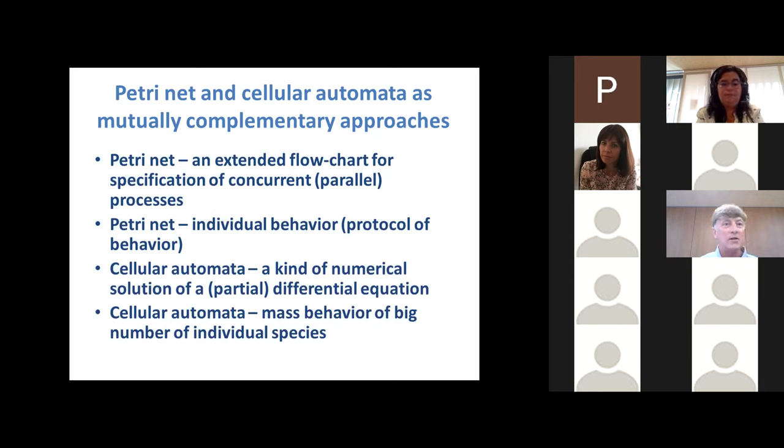For instance, you have an SIR model as a system of differential equations. When you start to solve it numerically, you come to a numerical scheme where you calculate state at some point depending on the state of neighboring points. So it is a very traditional way to come to cellular automata. It is a sequence of models.